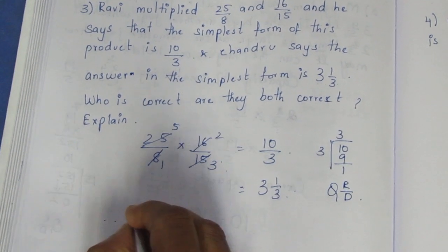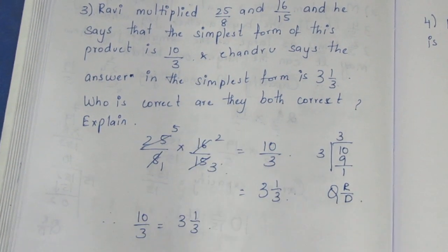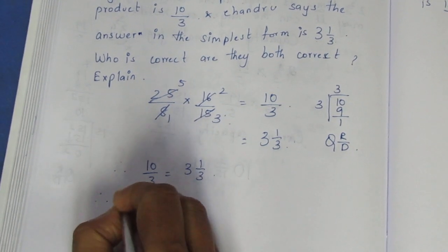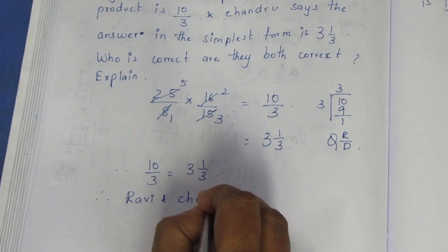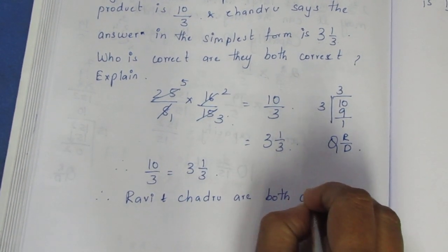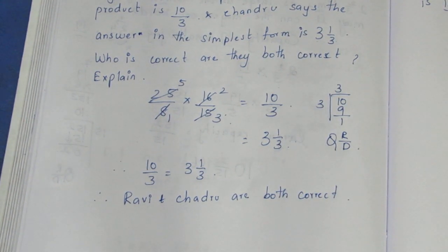Therefore, 10 by 3 is equal to 3 and 1 by 3. Both Ravi and Chandru are correct. That's the sum. Thank you.